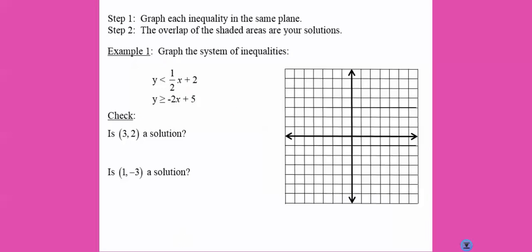So I'm going to start by graphing this first one, I'm going to do it in blue. So I'm going to start out at the y-intercept of positive two, and then I'm going to go up one over two. Since it is just a less than sign, I'm going to use a dotted line to connect my dots. So any time you see less than or greater than, you're going to use a dotted line or a dashed line.